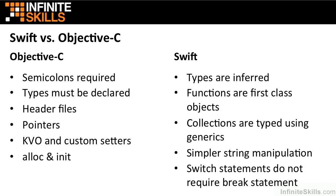Swift provides simpler string manipulation functions and abilities. Under Objective-C, you used to have to use clumsy formatter functions of NSString, and it wasn't really easy to format a string either. A much cleaner syntax has been put into Swift, and it also drops the need for things like stringWithFormat, the class function on NSString.